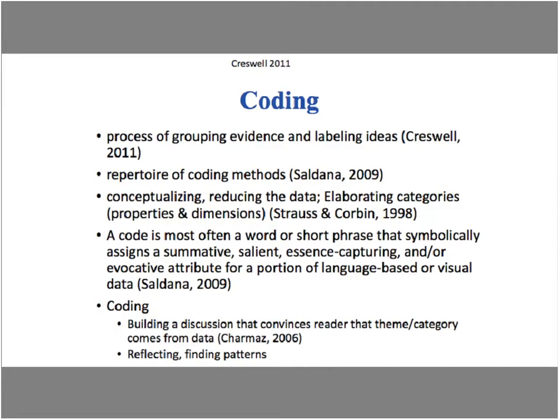Saldana describes a code as most often being a word or a short phrase that symbolically assigns a summative, salient, essence-capturing, and/or evocative attribute for a portion of language-based or visual data — as opposed to numerical data. We're basically trying to capture an attribute of the data. Charmaz emphasizes that coding can happen at any time in the analysis process, and it builds a discussion that convinces the reader that a theme or category actually came from the data. Coding keeps us close to the data and provides evidence of the process from raw data to thematic categories.